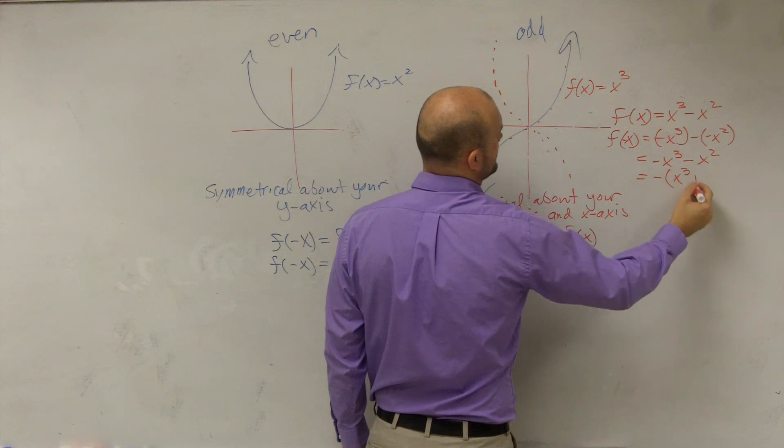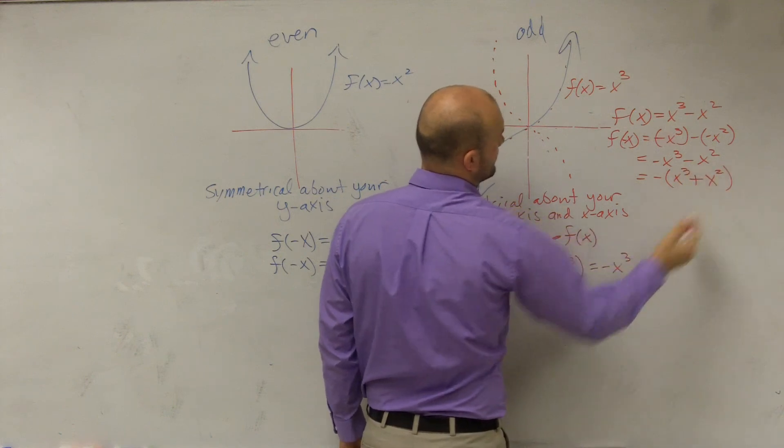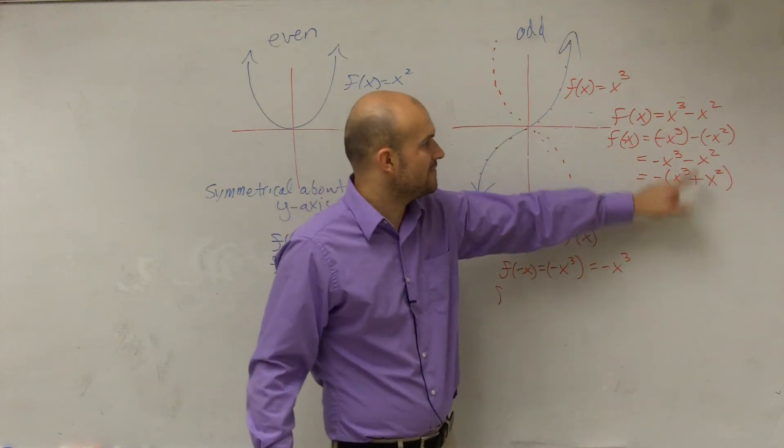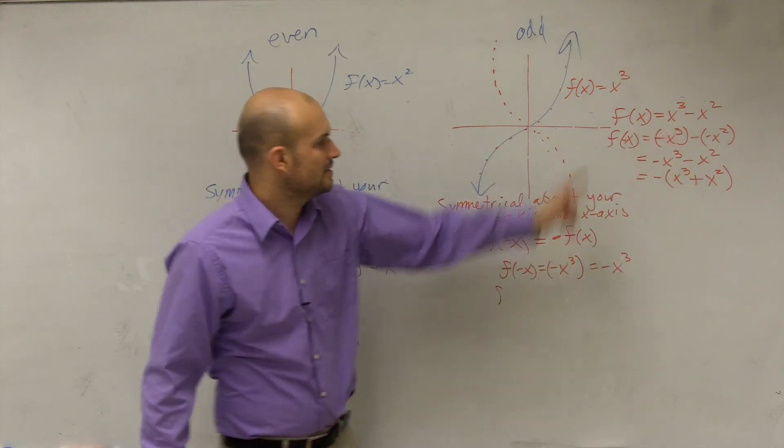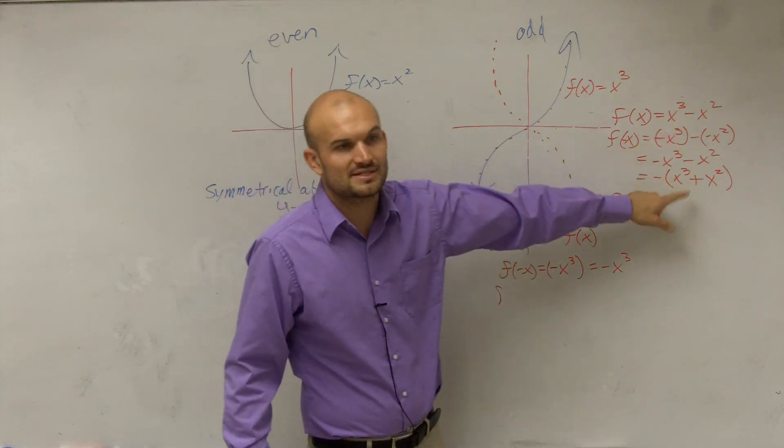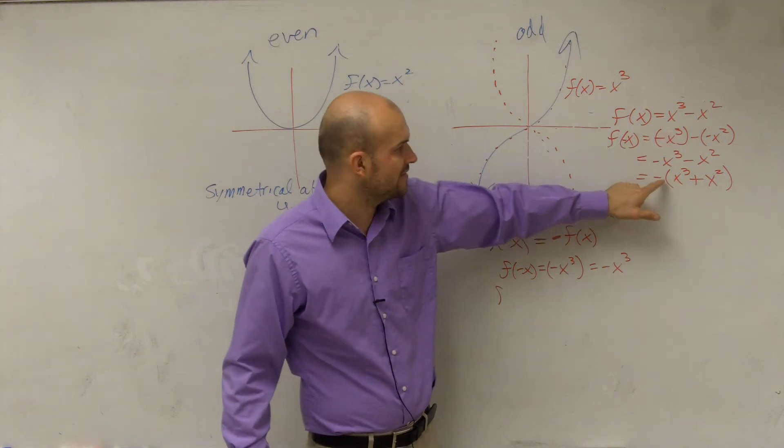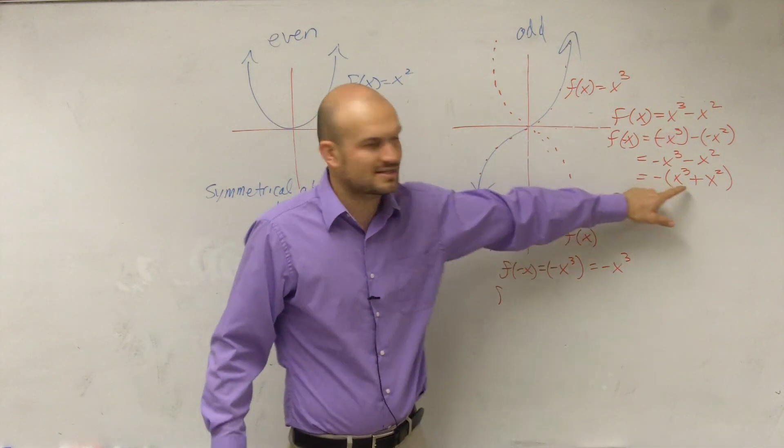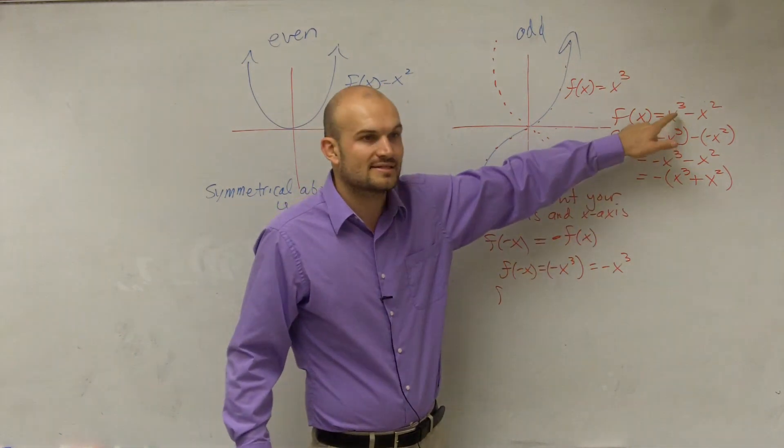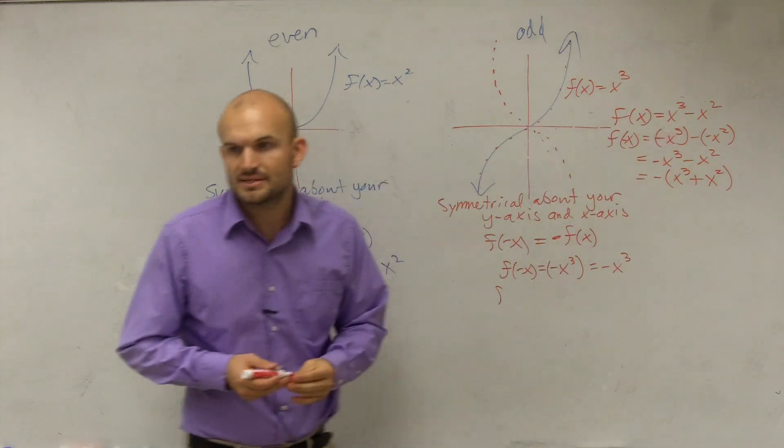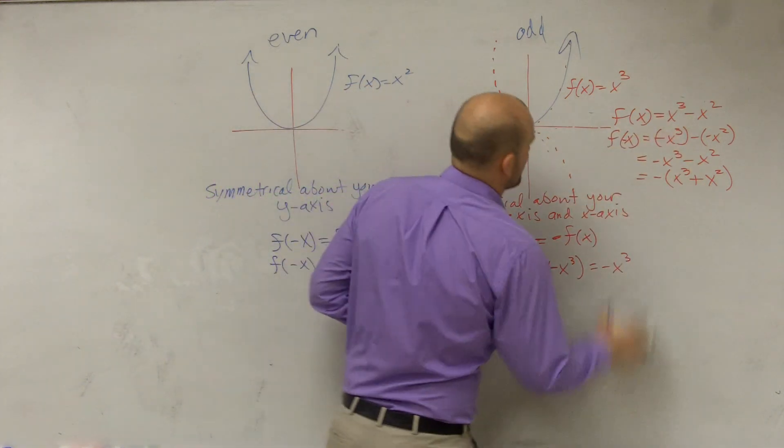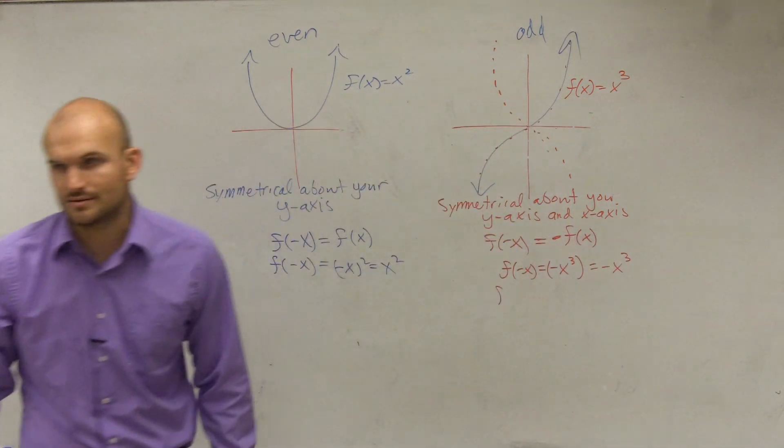So is that my f of x? No. So that's not odd. This is an odd function, but that one's not odd, because when I factor out my negative, it's not negative f of x, because that's not f of x. F of x is x cubed minus x squared. Make sense? So that's odd and even functions. Everybody have an idea of it?